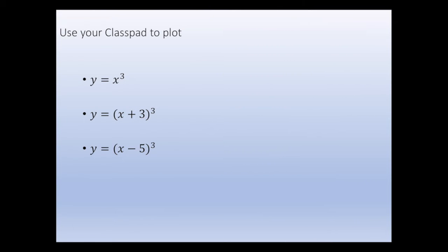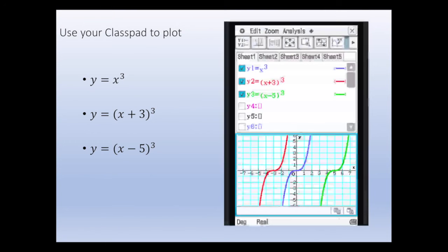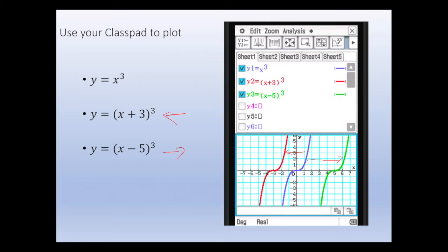Now plot y equals (x plus 3) cubed and y equals (x minus 5) cubed. The effect of plus 3 inside the bracket shifts the curve to the left by 3, while minus 5 inside the bracket shifts the curve to the right by 5. This is the same principle as for quadratic functions.